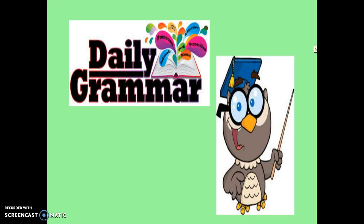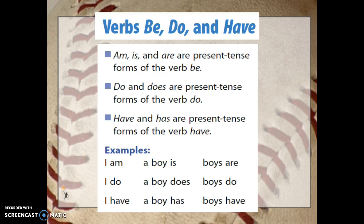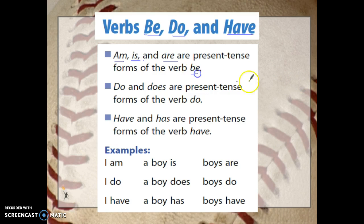All right, third graders, our grammar lesson today is on verbs again. We have be verbs, do verbs, and have verbs. Am, is, and are are present tense forms of the verb be. Do and does are present tense forms of the verb do. Have and has are present tense forms of the verb have.